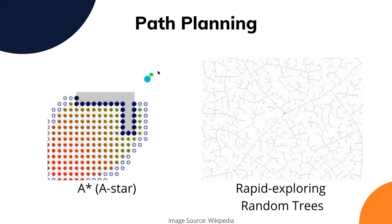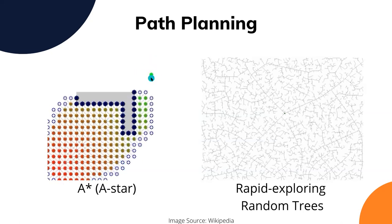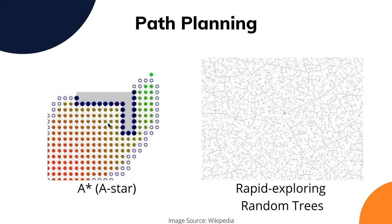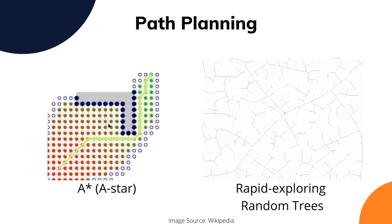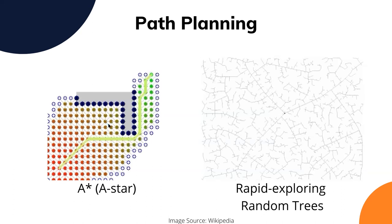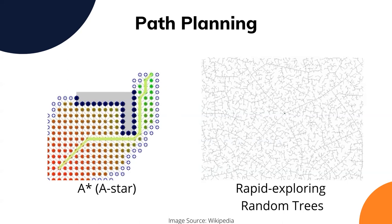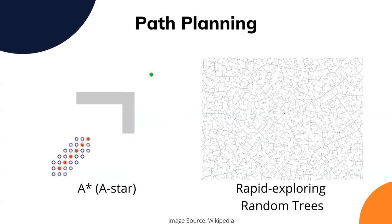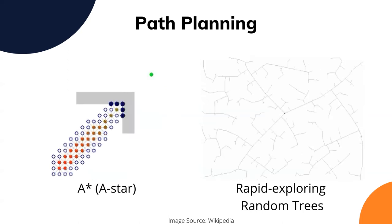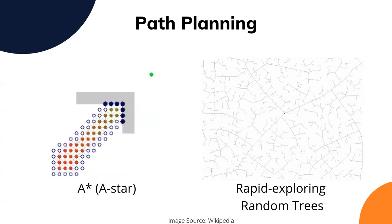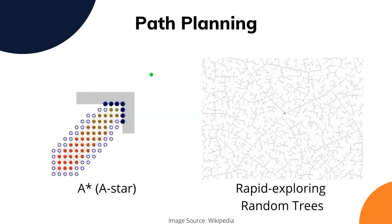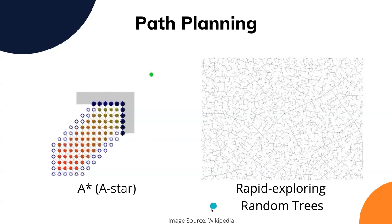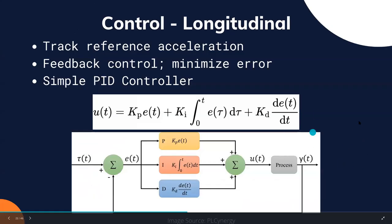A* is more heuristic-based — you keep a heuristic from any state to the goal, and also track how much you have moved from the start to the current pose. Based on that you find out the cost of taking a certain action from that state.